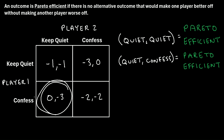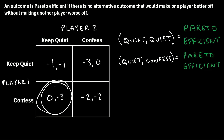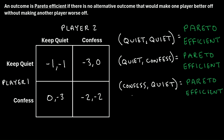Now let's consider the outcome where player one confesses but player two keeps quiet. Moving to one alternative makes player one worse off — they'd go from a payoff of zero to negative one. Moving to another alternative, player one would go from zero to negative three — also worse off. And in the last alternative, player one moves from zero to negative two — again worse off. Since at least one player would be worse off in every alternative, this outcome is also Pareto efficient. The outcome where player one confesses and player two keeps quiet is Pareto efficient.